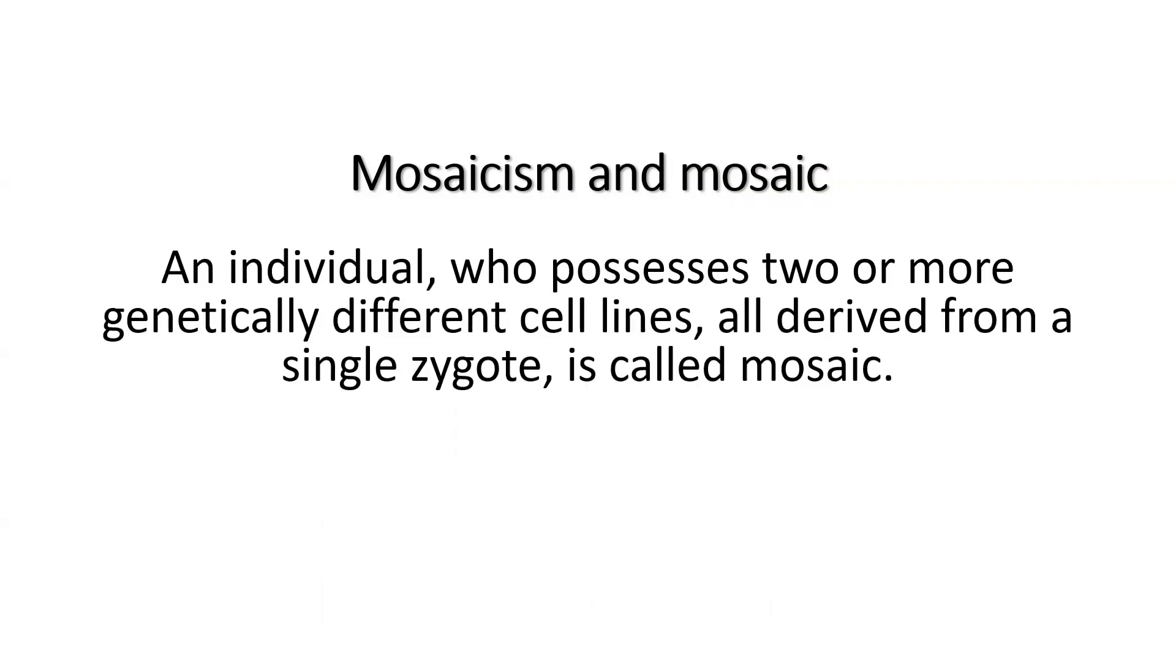First we need to know what is mosaic or what is mosaicism. An individual who possesses two or more genetically different cell lines, all derived from a single zygote, is called mosaic. This condition is called mosaicism.